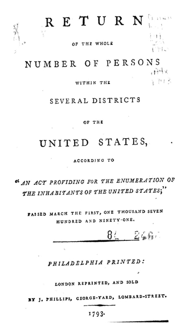The 1950 Census Questionnaire removed the word 'Color' from the racial question and also removed Hindu and Korean from the race choices. The 1960 Census re-added the word 'Color' to the racial question, and changed 'Indian' to 'American Indian,' as well as added Hawaiian, part Hawaiian, Aleut, and Eskimo. The other option was removed.